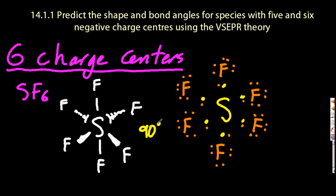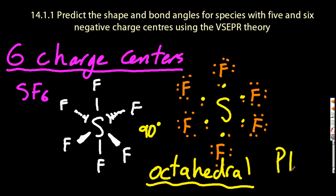The bond angle there is 90 degrees. It kind of looks like a diamond shape, and we call that octahedral. PF6- is another octahedral one specifically mentioned in the syllabus.